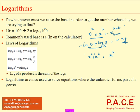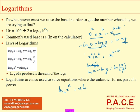Similarly, x to the power of a divided by x to the power of b equals x to the power of a minus b corresponds in logarithms to log x minus log y equals log(x/y) — division in indices translates to subtraction in logarithms. The power rule states: log of x to the power of n equals n times log x — you bring the power to the front.